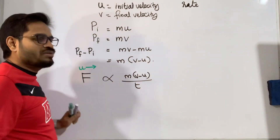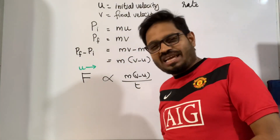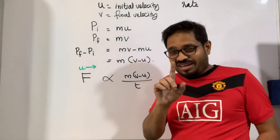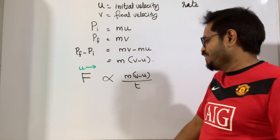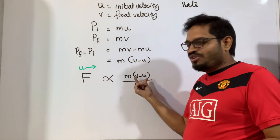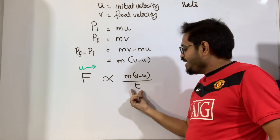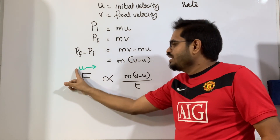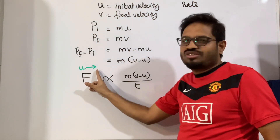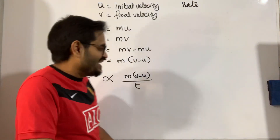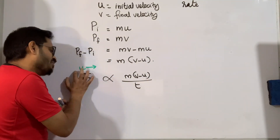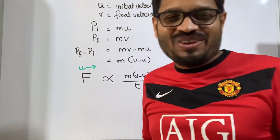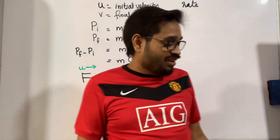Putting it all together: 'The rate of change of momentum is always directly proportional to the unbalanced force applied in the direction of force.' That is the statement for Newton's Second Law of Motion. Follow my fingertips — t means rate, the numerator is change of momentum, so: the rate of change of momentum is always directly proportional to the applied unbalanced force in the direction of force.